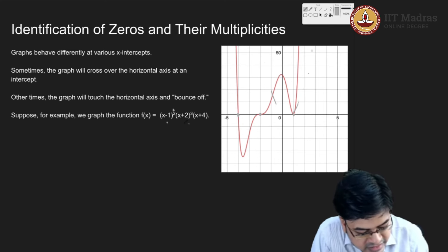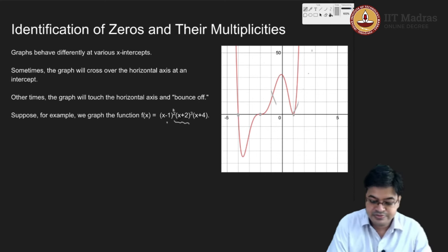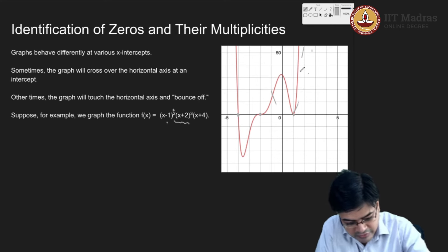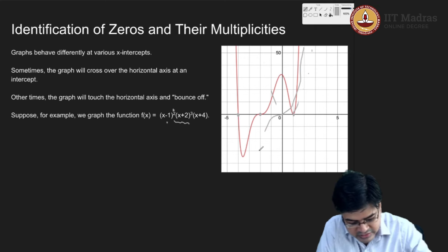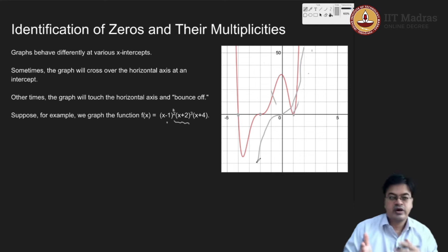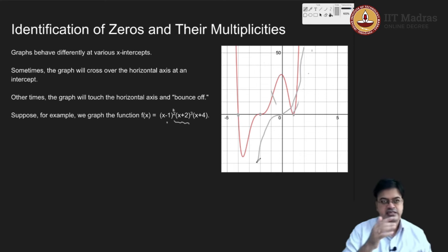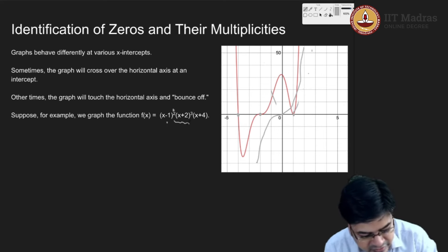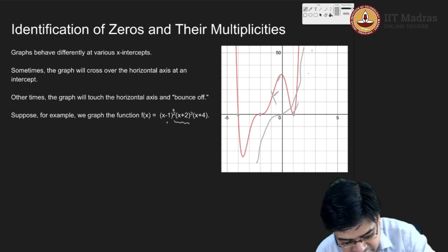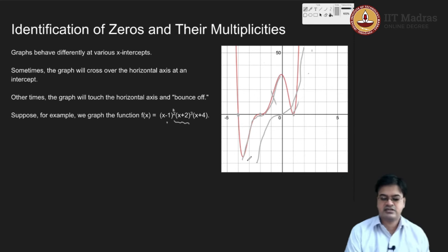Now let us look at x plus 2 cubed. What is the graph of x cubed? A graph of x cubed is somewhat like this — it crosses the x-axis. Now that behavior is evident when instead of x I consider x plus 2, the whole cube. That behavior is evident here: it actually cuts and crosses the x-axis.